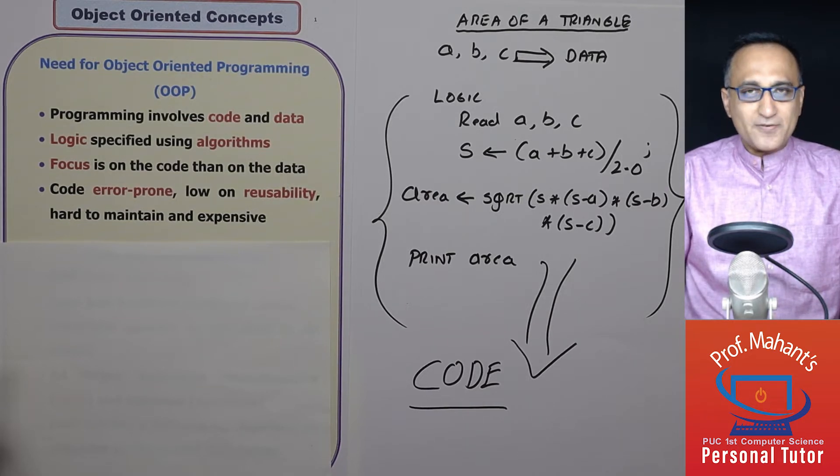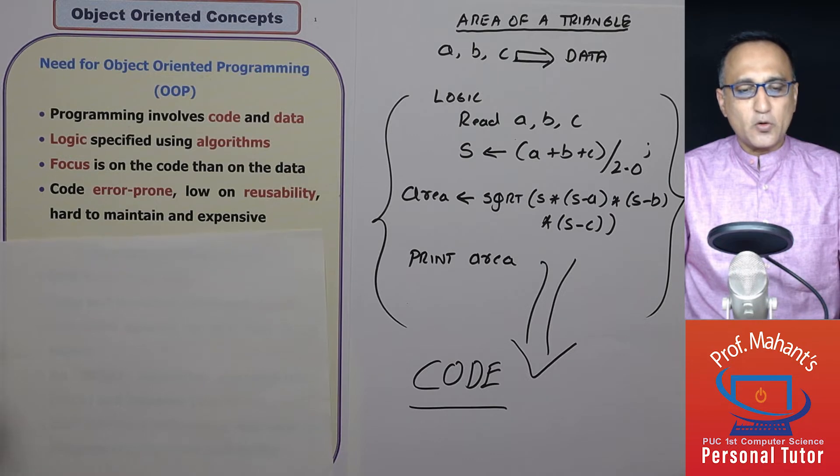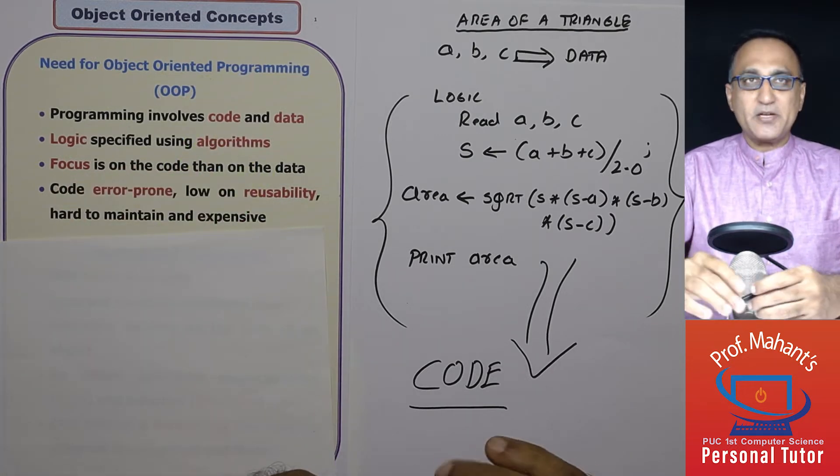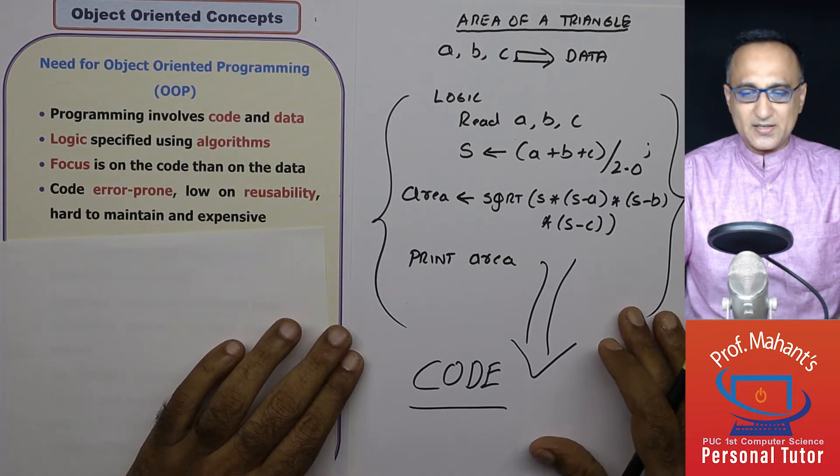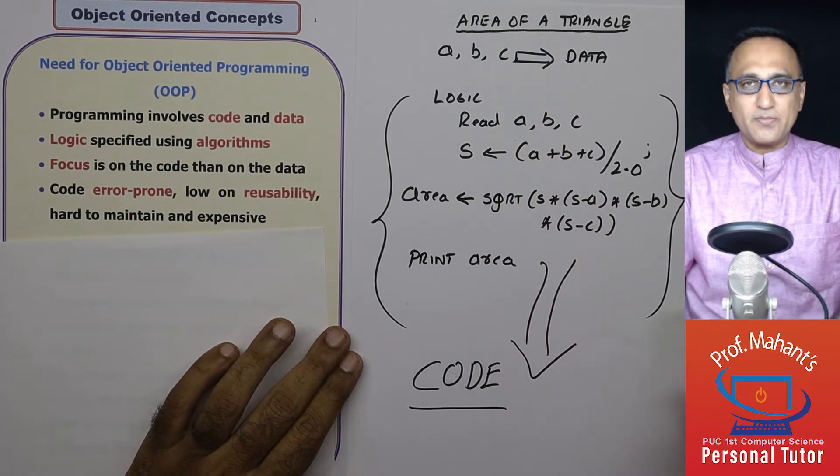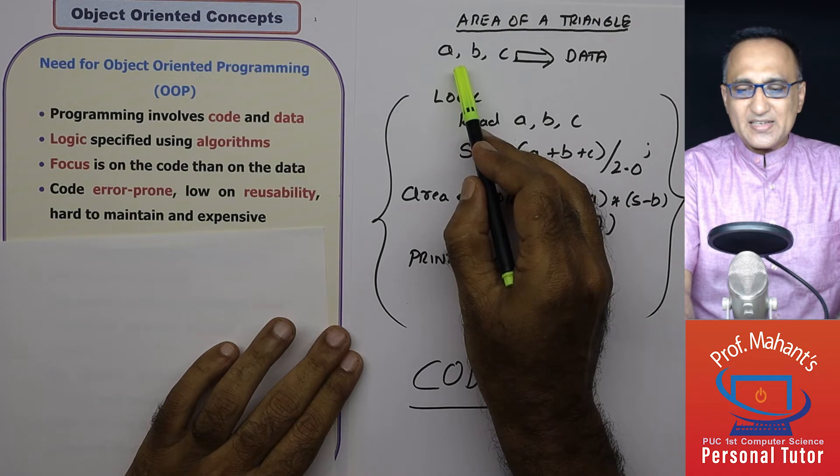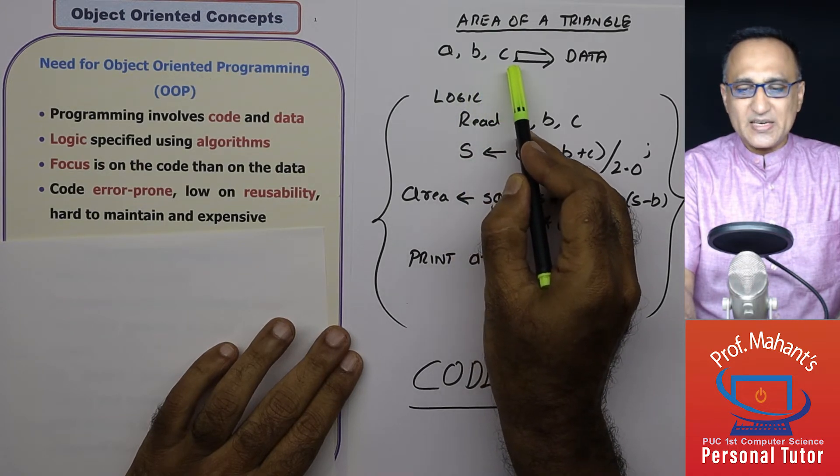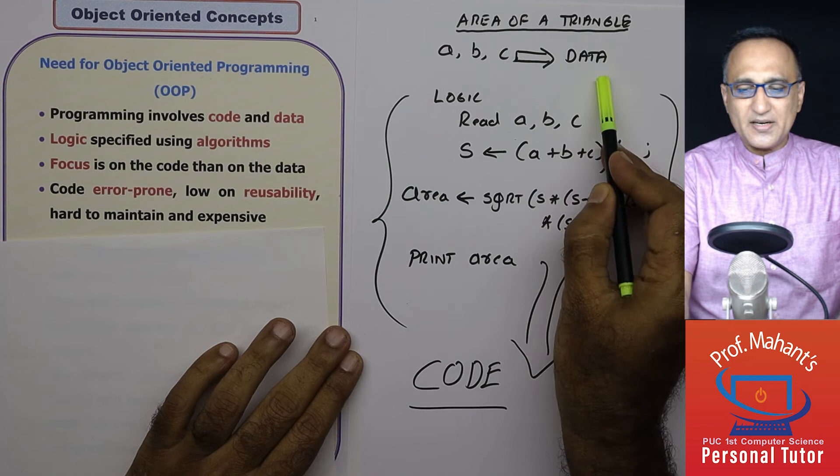Now all of us know programming involves both code and data. So let me tell you what is code and what is data. Suppose I have to calculate area for a triangle using Hero's method, I will need the three sides ABC, this constitutes my data.